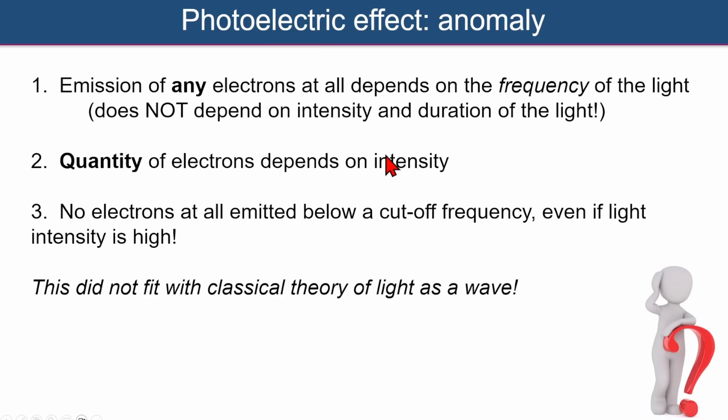To clarify: the photoelectric effect had this rather curious result. The emission of any electrons depended on the frequency of the light — why would it depend on the colour? The quantity of electrons only depended on the intensity of the light. With very intense ultraviolet you'd get a lot of photoelectrons, but with lower intensity you'd still get electrons, just fewer. In contrast, with intense red light, nothing would happen — no electrons at all.